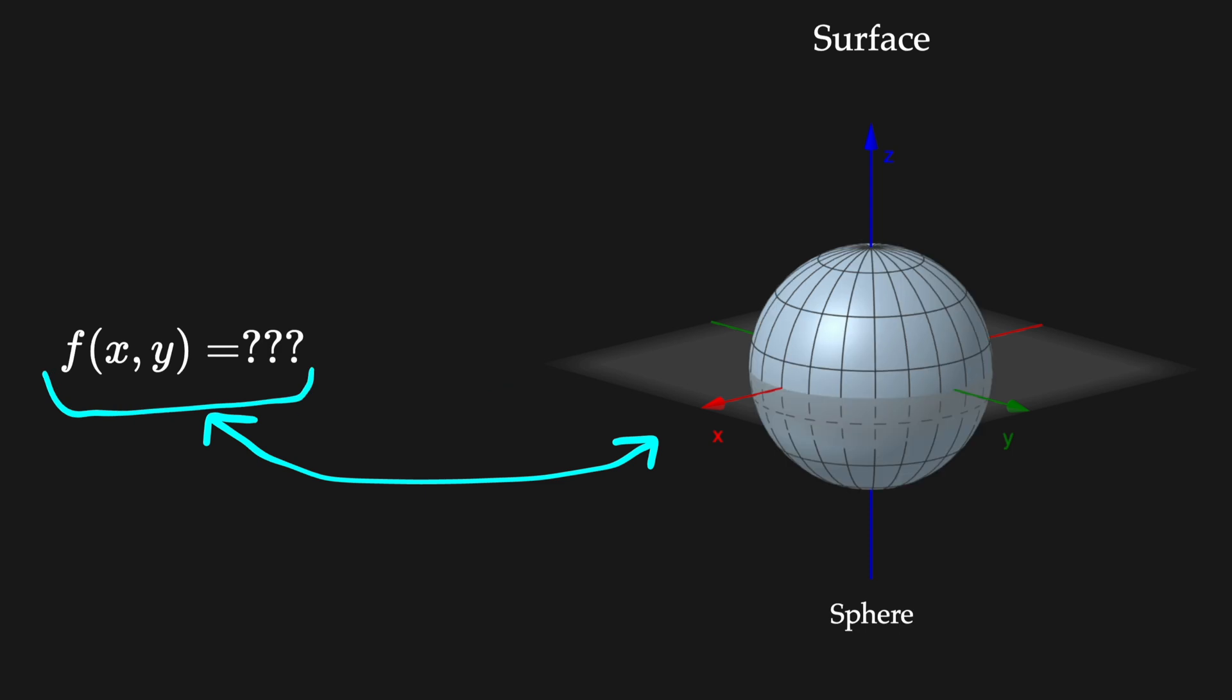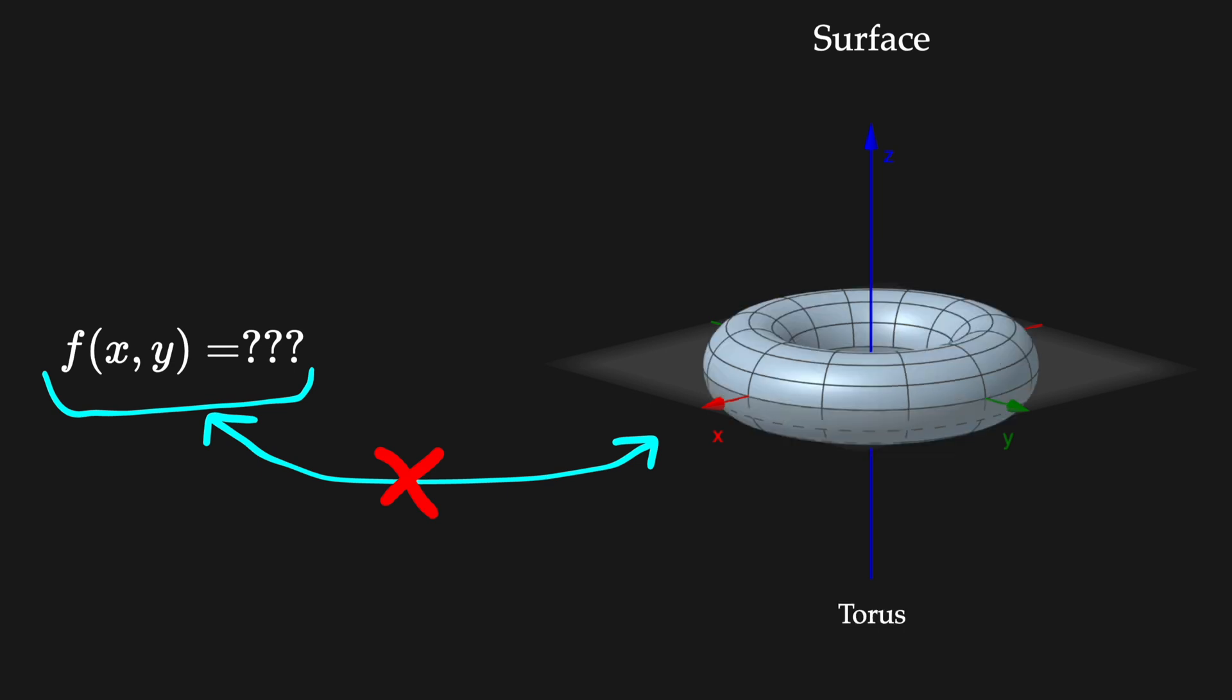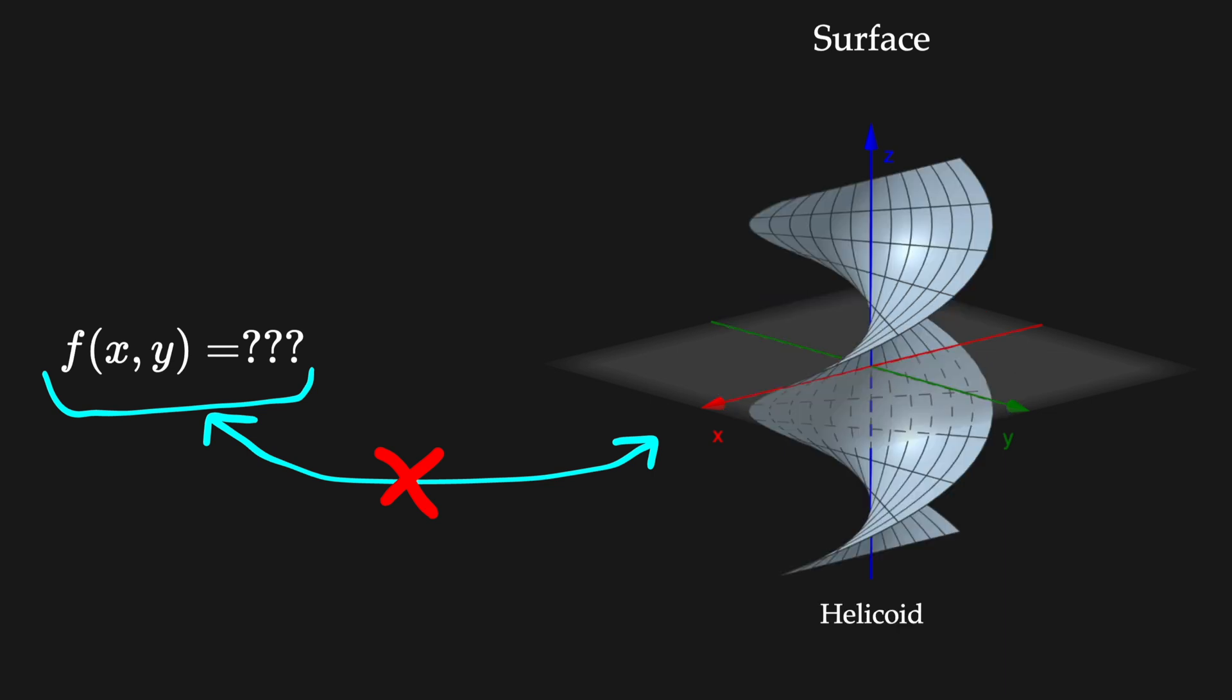But what about the reverse? Does every surface have a corresponding function of two variables, like the sphere for example? Or what about the torus or this surface known as the helicoid?